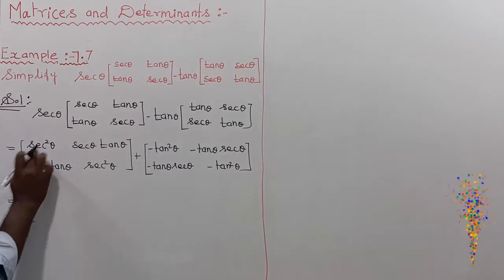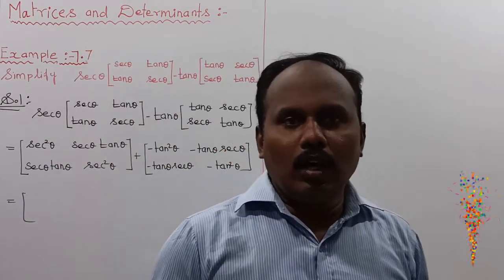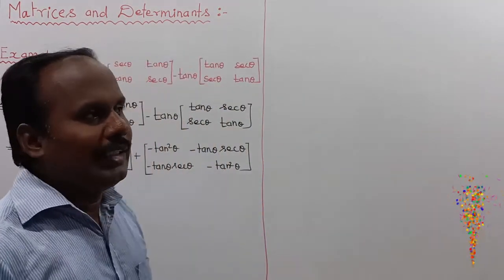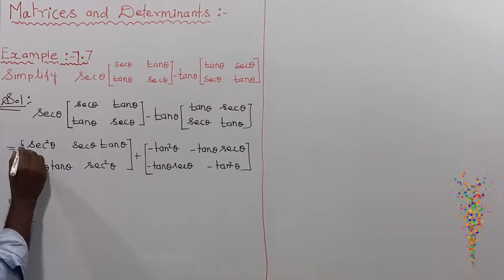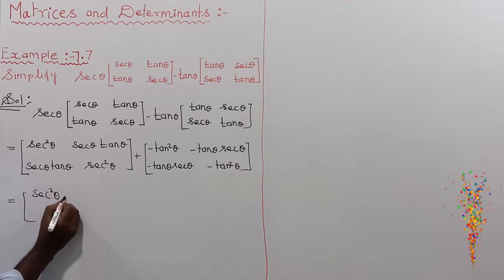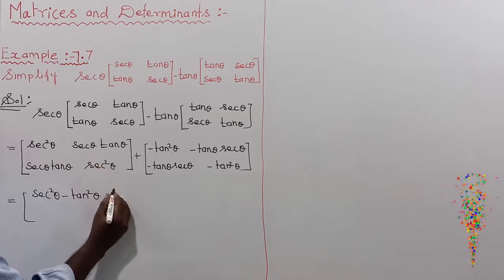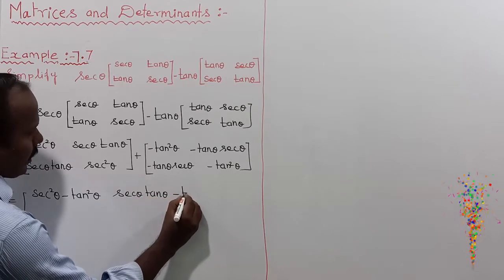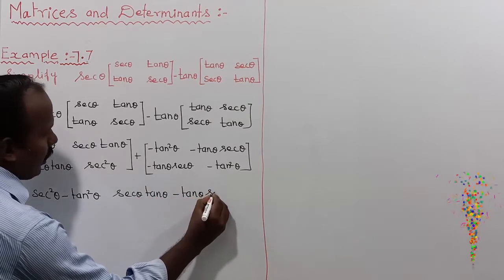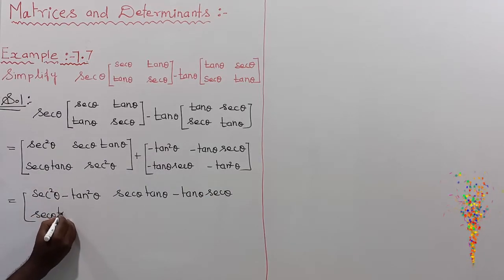Now this equals the first matrix plus the second matrix. The order of both matrices is the same, so we apply the matrix addition property. The first element is sec²θ minus tan²θ. The next terms are sec θ·tan θ minus tan θ·sec θ, and sec θ·tan θ minus tan θ·sec θ.